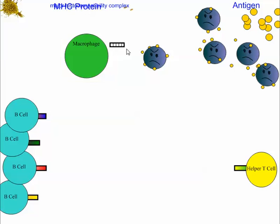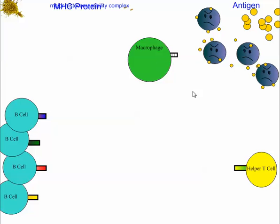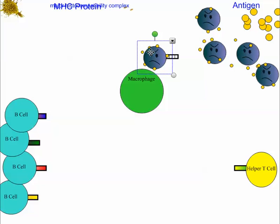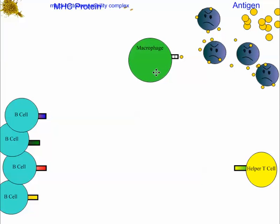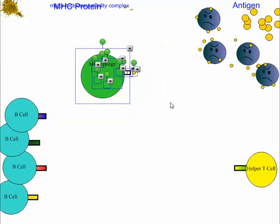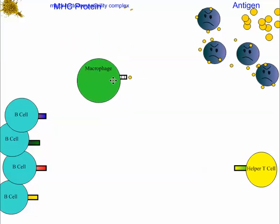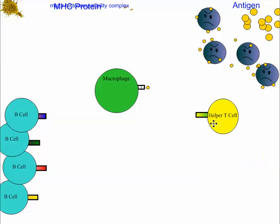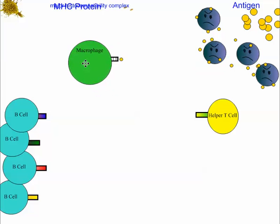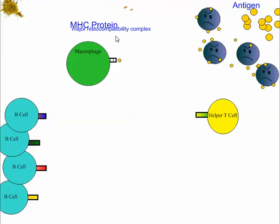After digestion, the macrophage holds up its work like a trophy. It presents one of the antigens on the outside — kind of like a Game of Thrones style trophy, displaying your defeated enemy. The macrophage takes one of these antigens and presents it outside on this little trophy structure, moving around with it displayed. That little protein holding the antigen is called the MHC protein.